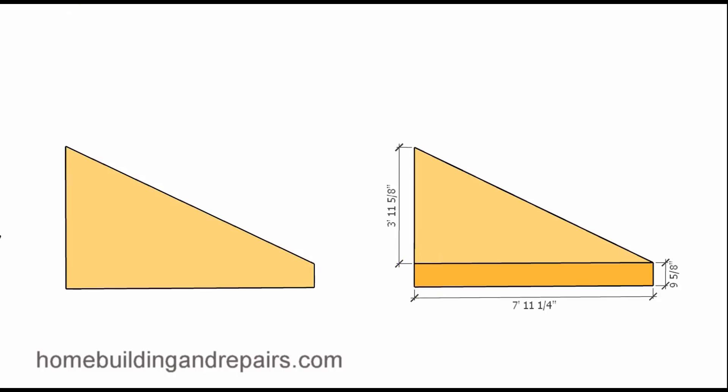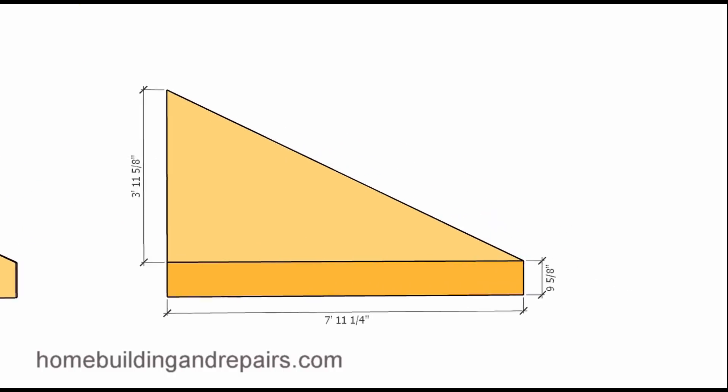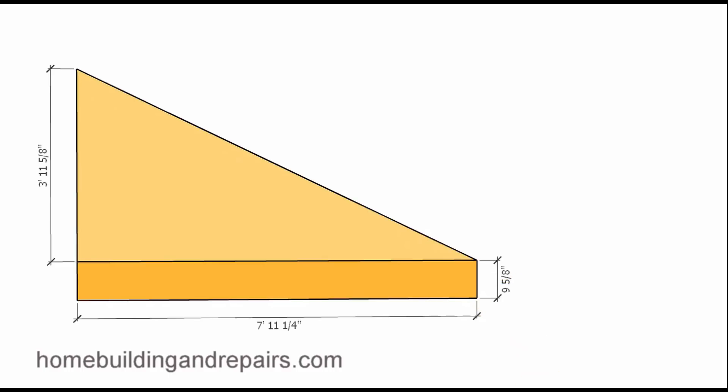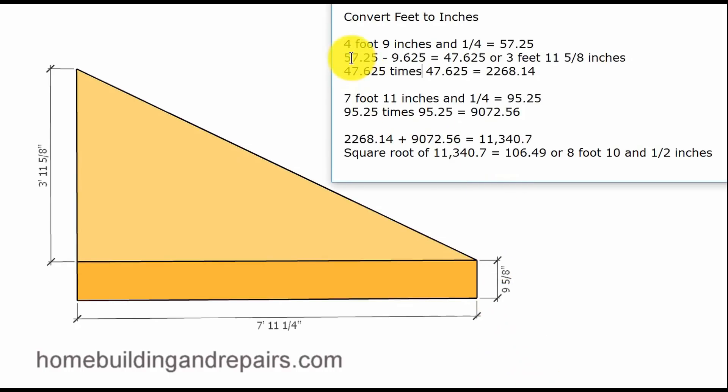So the first thing we will need to do will be to subtract the nine and five-eighths from the four foot nine inches and a quarter. Now the four foot nine inches was the overall length here. We need to subtract nine and five-eighths from that.